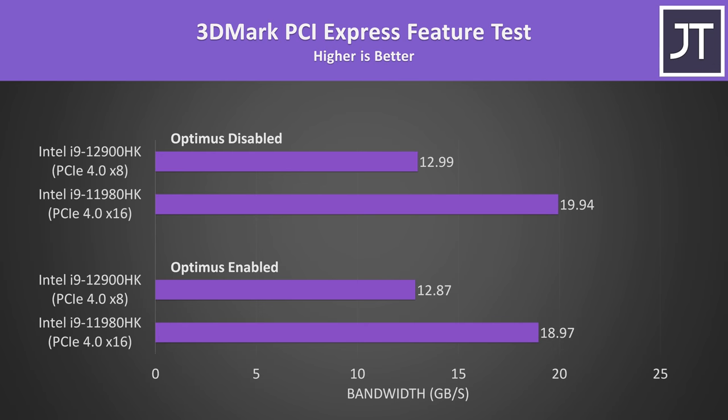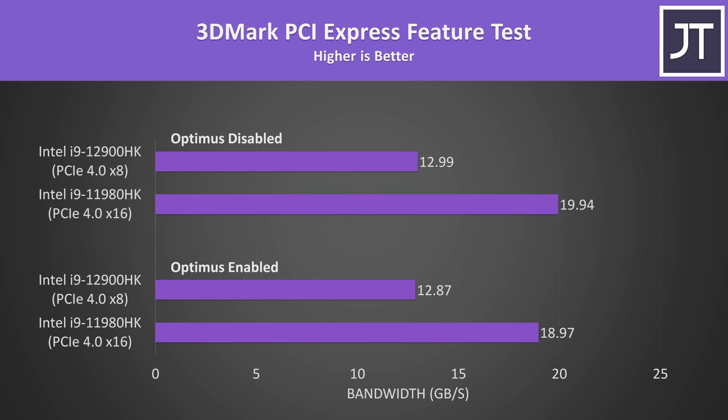With the newer 12th gen though, they can only use up to 8 lanes for the GPU, meaning some 11th gen laptops may have more PCIe bandwidth, which is the case here with MSI's GE76. This probably won't matter in most games though, as right now 8 lanes of PCIe 4 seems to be enough for modern gaming laptop GPUs.